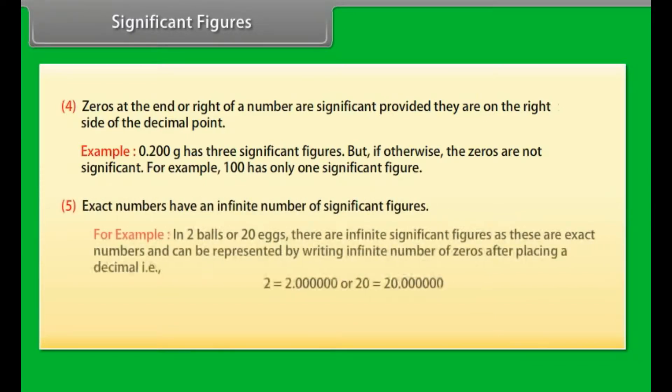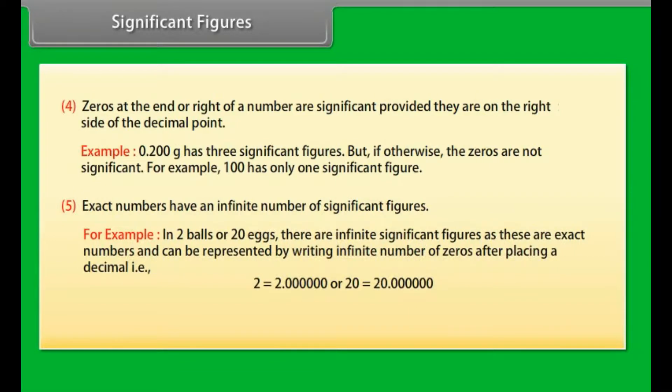Exact numbers have an infinite number of significant figures. For example, in two balls or 20 eggs, there are infinite significant figures as these are exact numbers and can be represented by writing infinite number of zeros after placing a decimal. That is, 2 = 2.0000 or 20 = 20.0000.